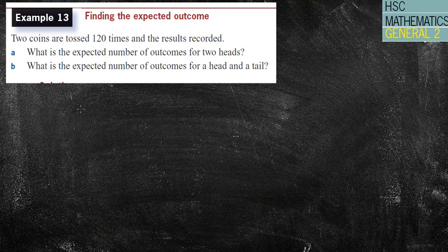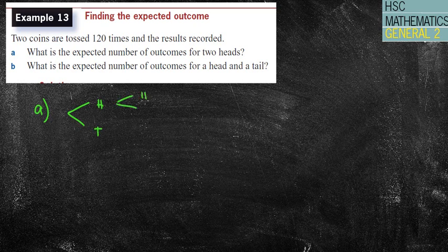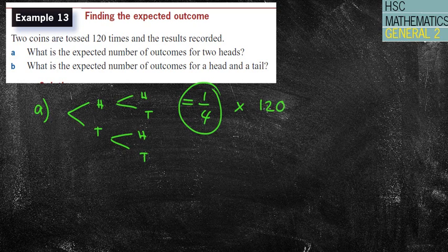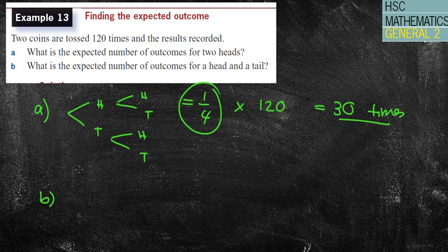Two coins are tossed 120 times and the results are recorded. What is the expected number of outcomes for two heads? We can use a tree diagram — two heads gives one in four chances. That's the theoretical probability. Multiply by 120: 120 times one quarter equals 30. So I would expect to get two heads 30 times. Part B asks for the expected number of a head and a tail — that's two quarters, or one half. Half times 120 is 60.